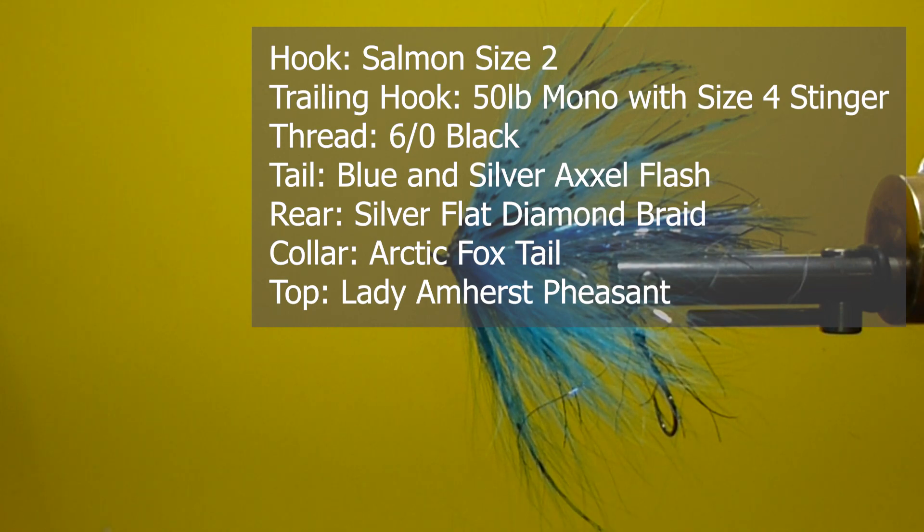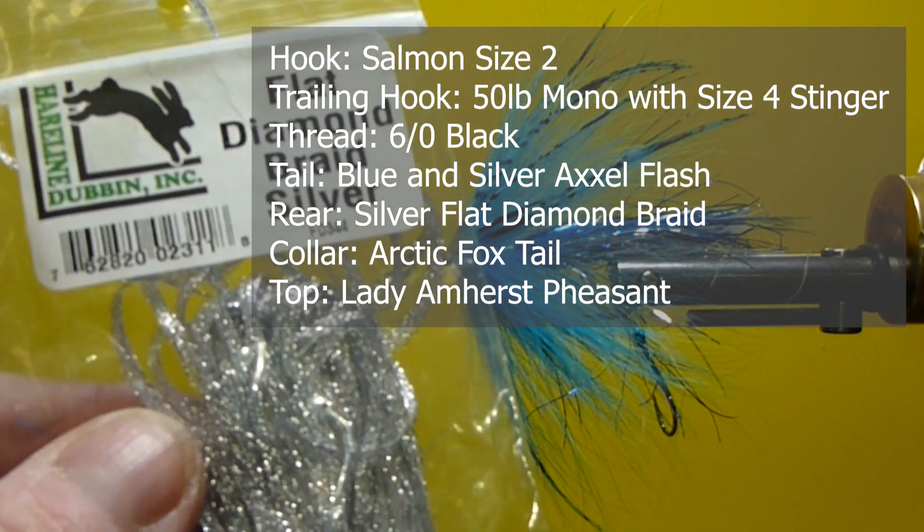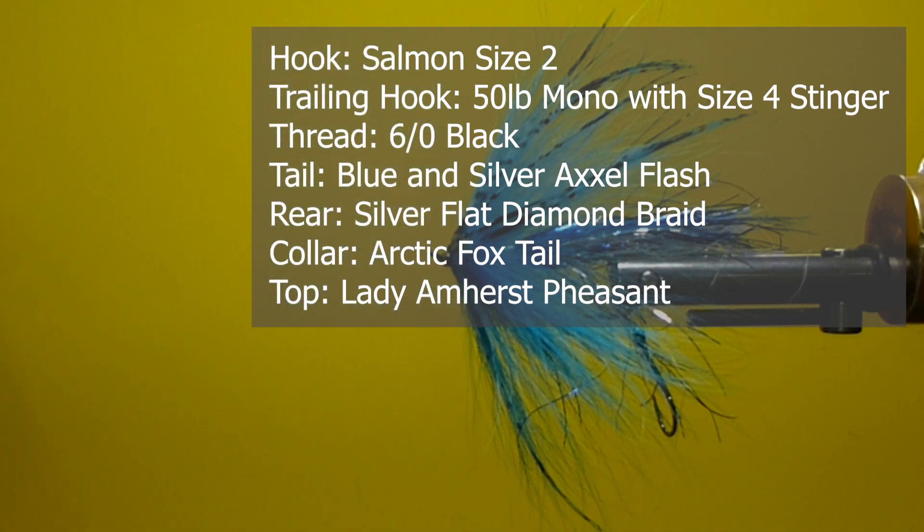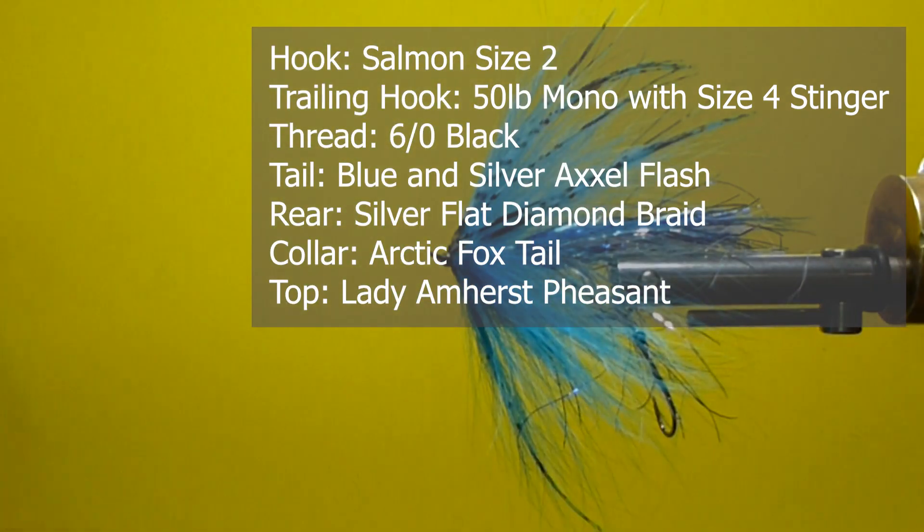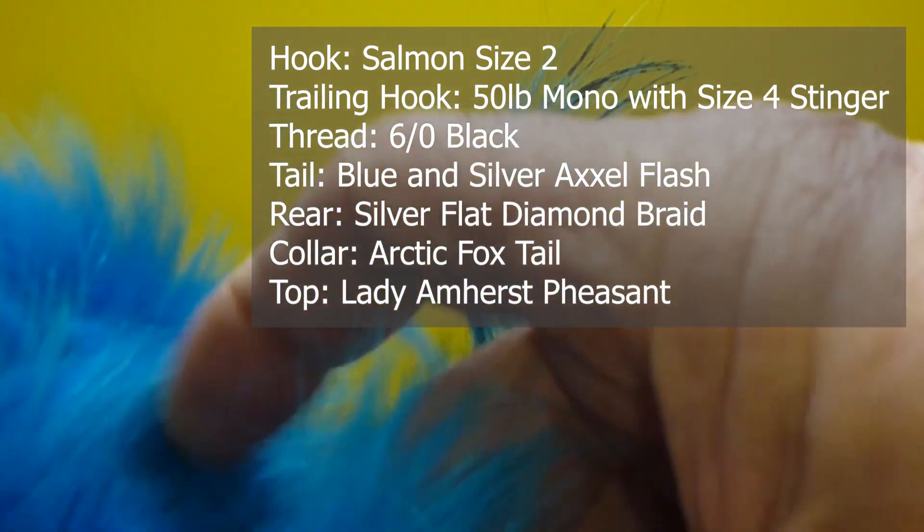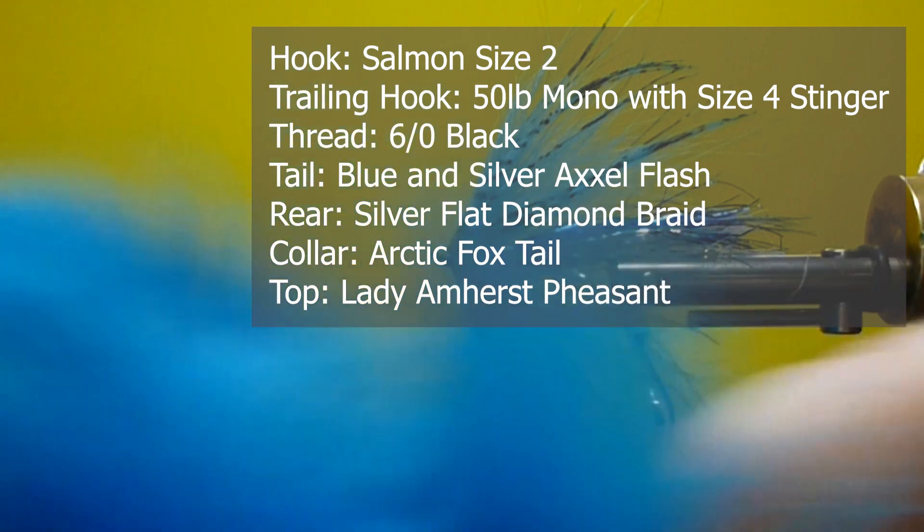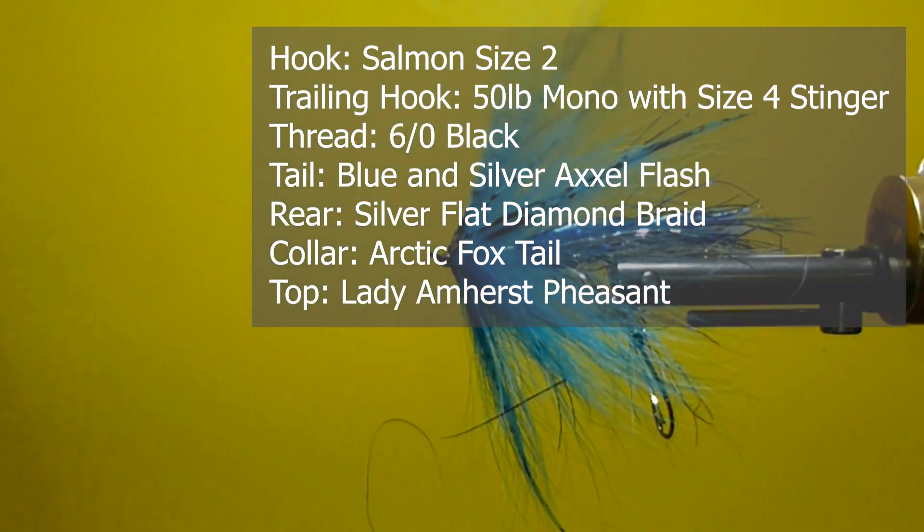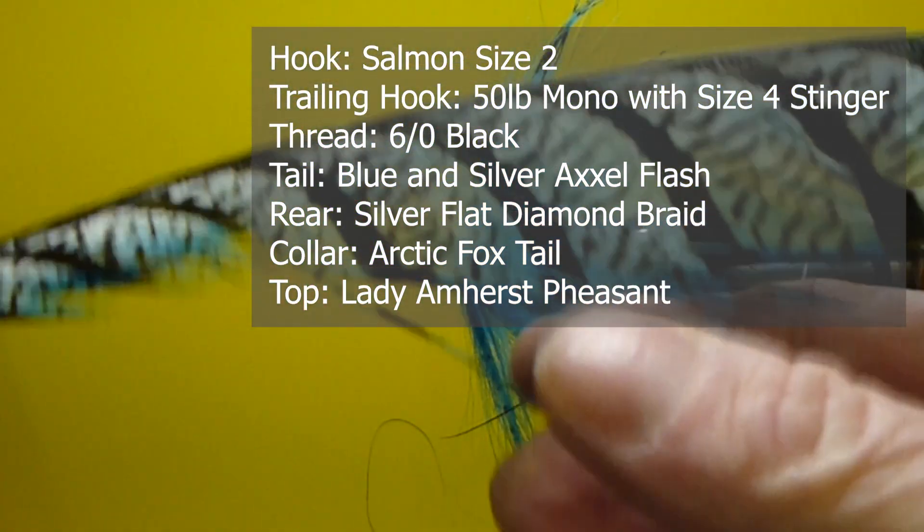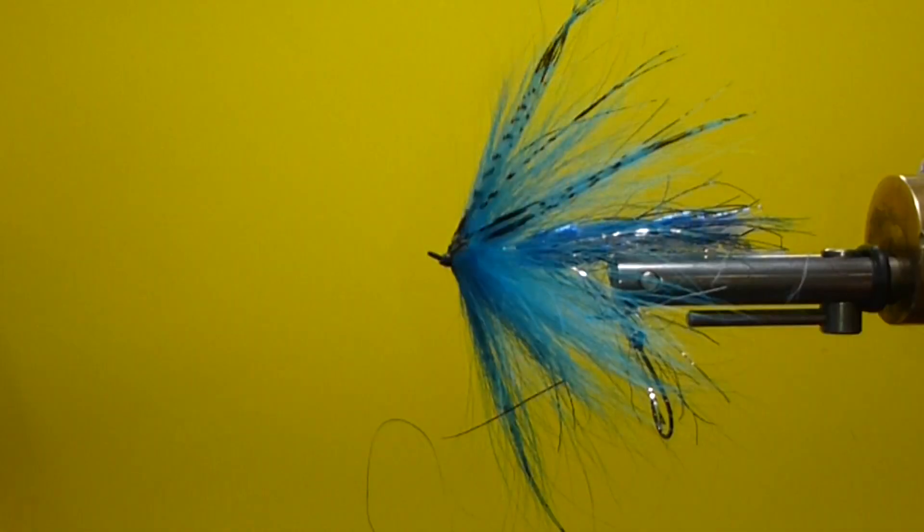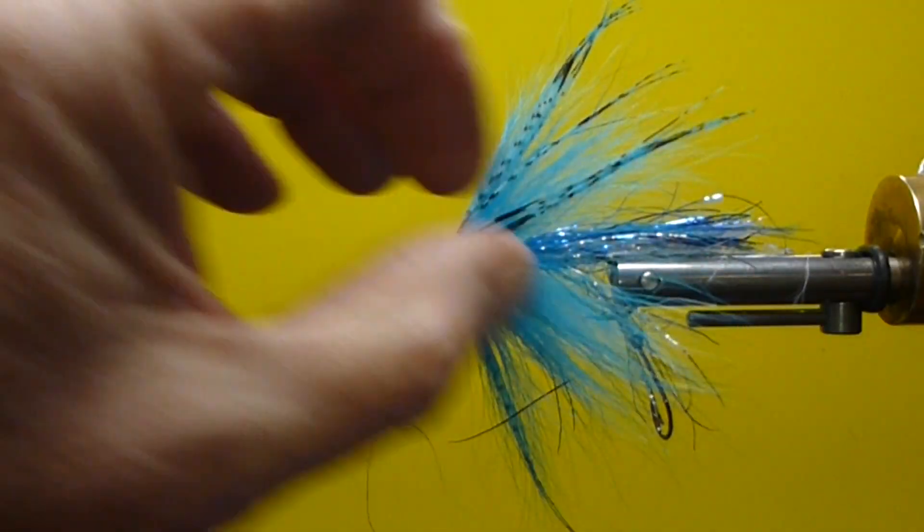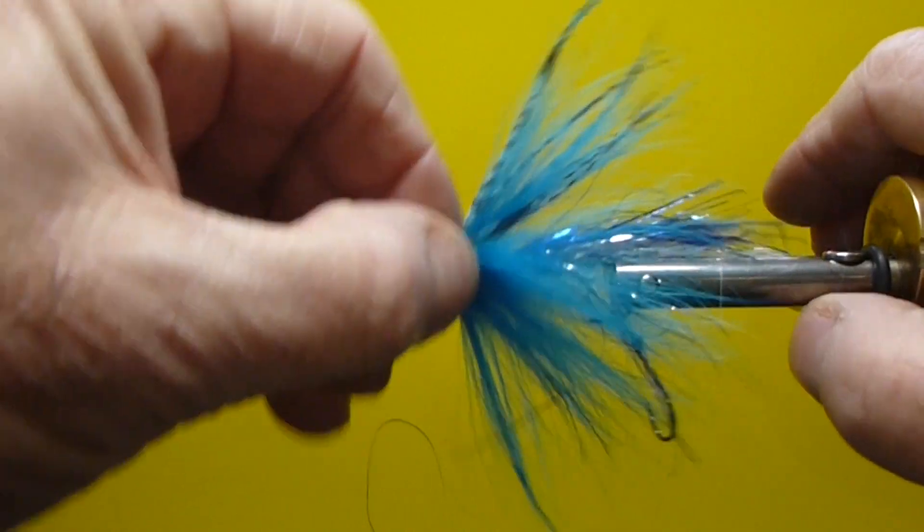I used to use intruder wire, but it's so stiff and hard to tie on. The rear butt, I'm going to use some flat diamond braid in silver. The tail, I'm going to use some axle flash in blue and silver mixed. And, of course, the collar is going to be this really nice dyed arctic fox. And over the front of the collar, we're going to dress that up with some Lady Amherst. This is white with some blue dyed tips on it. It's quite nice. It really sets it up, makes it look pretty.